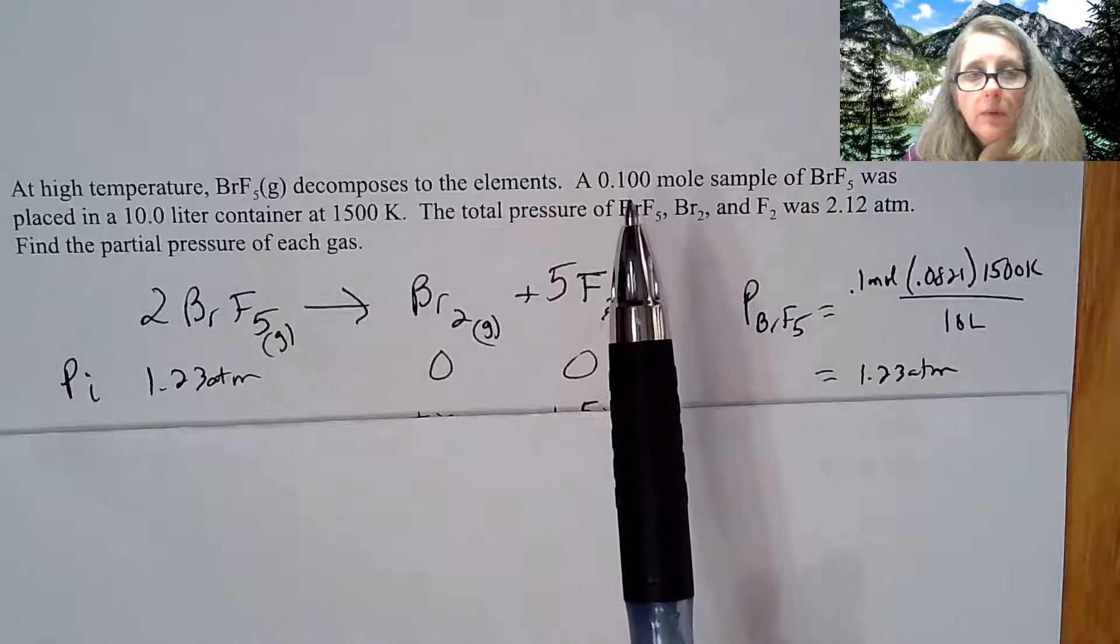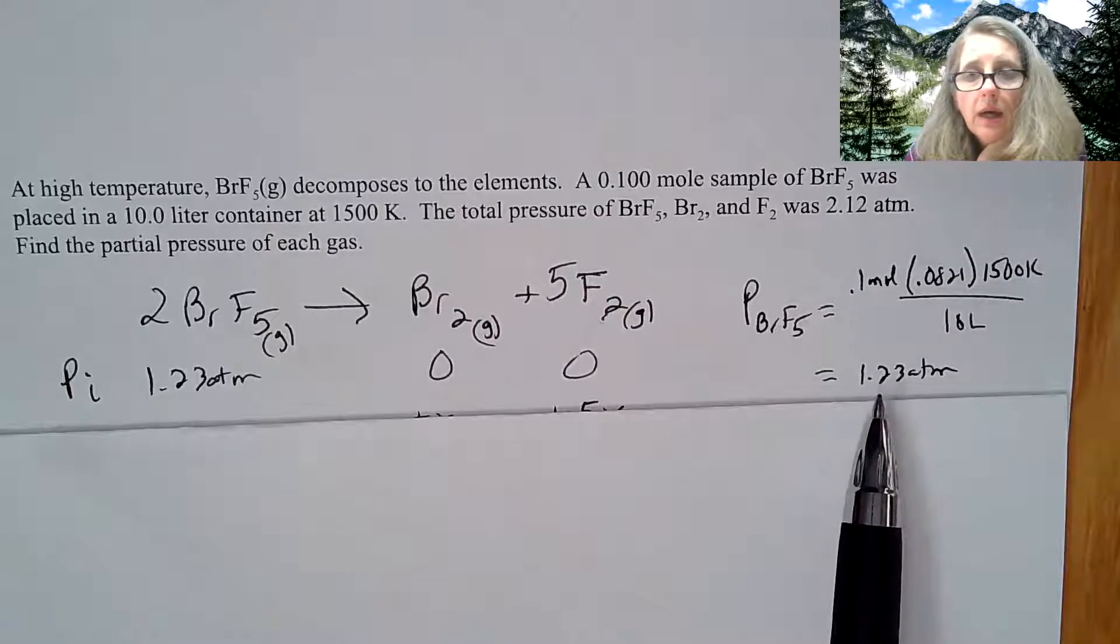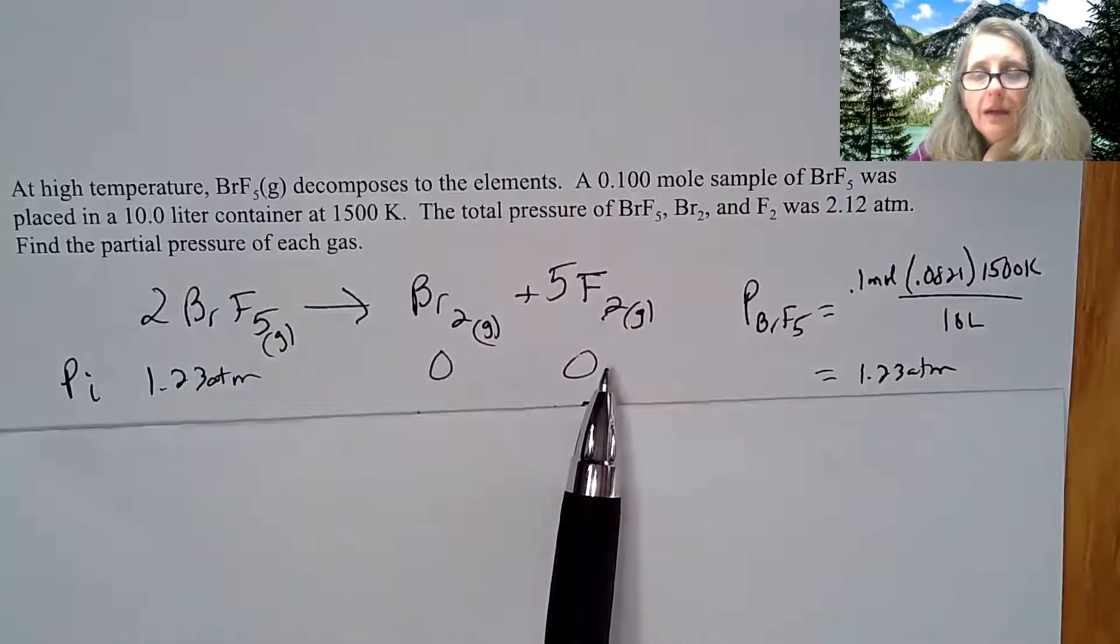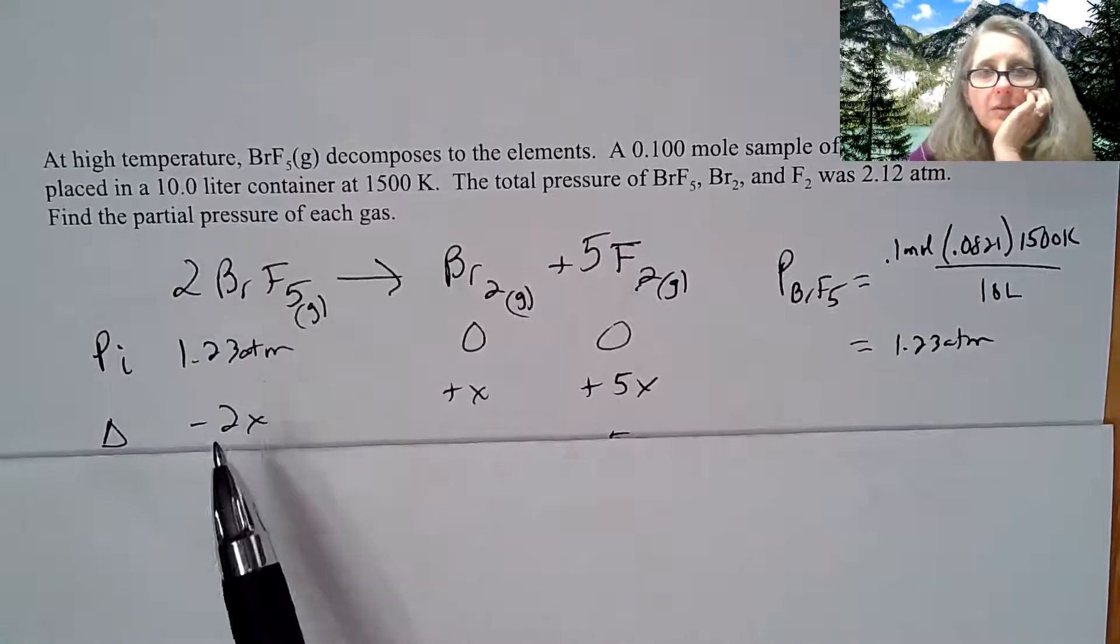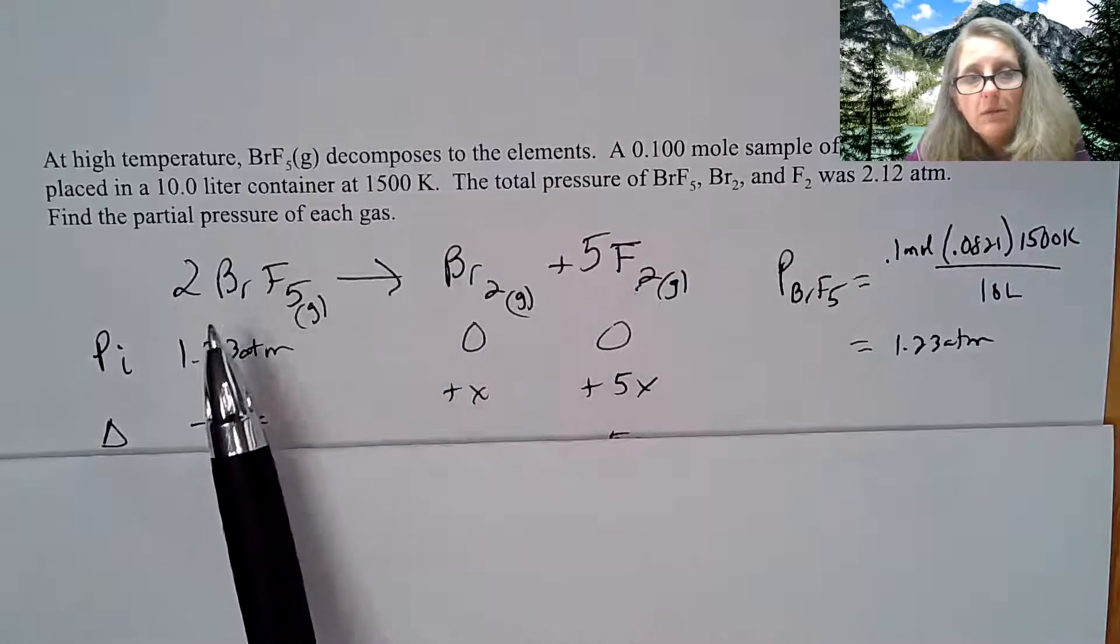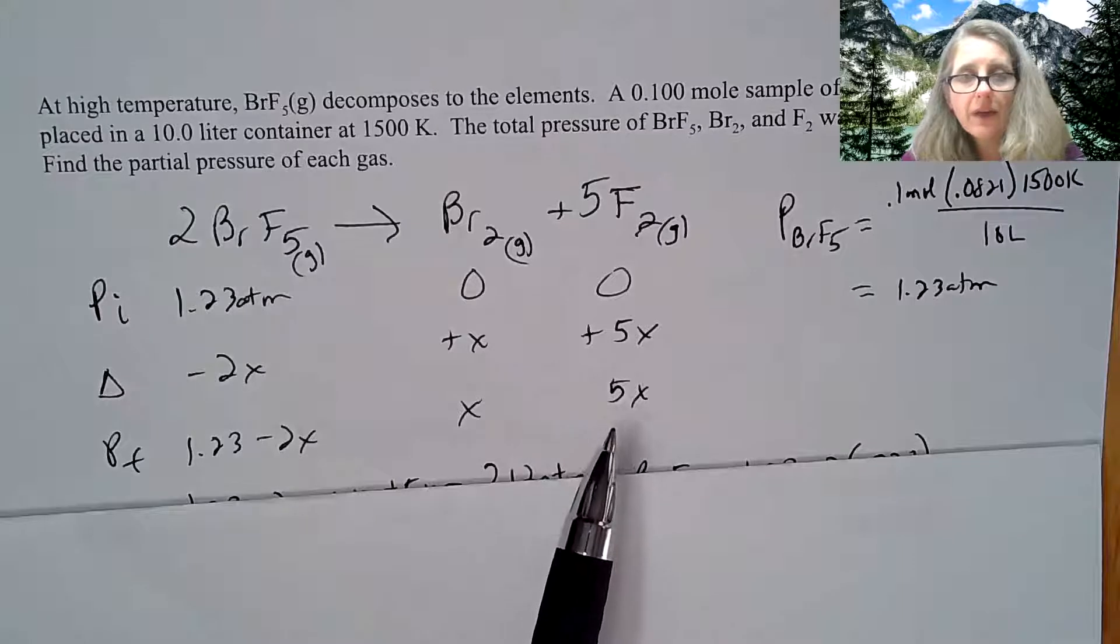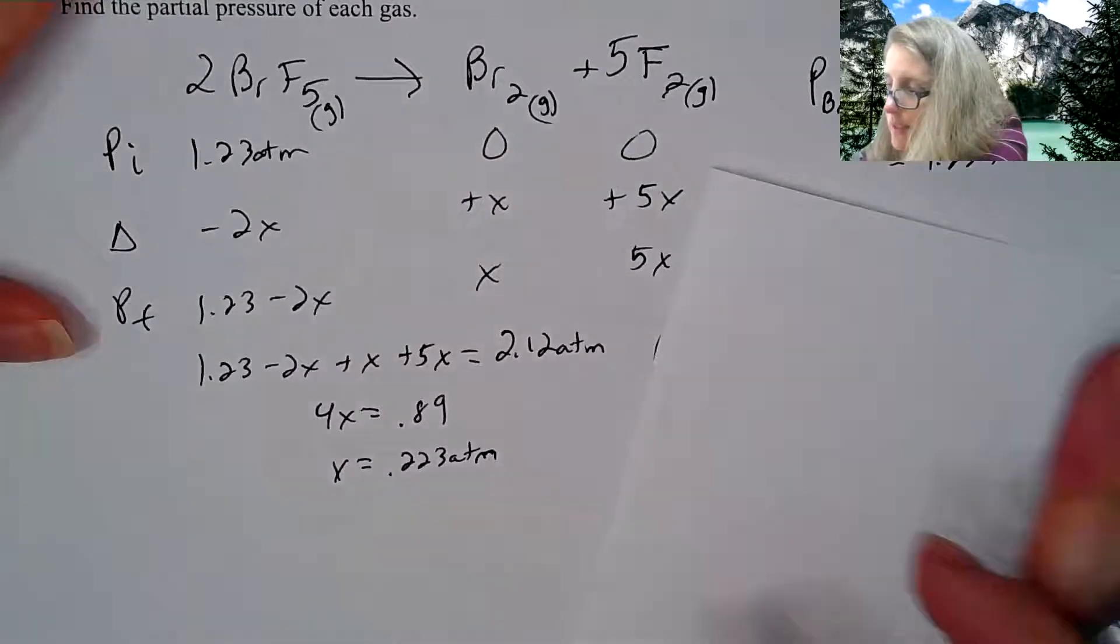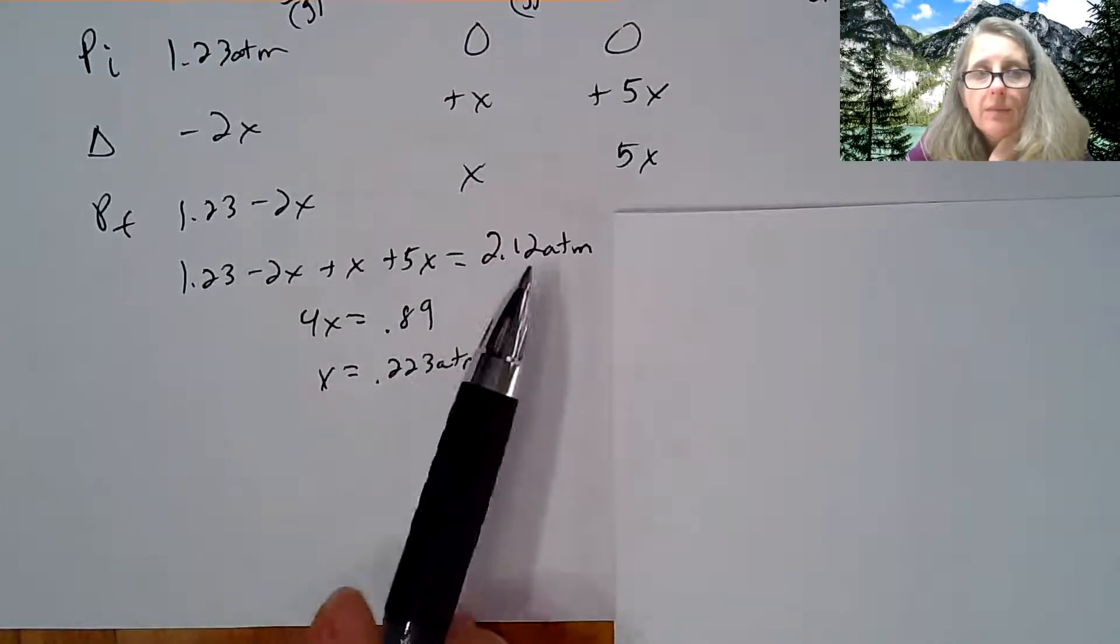I was given a 0.1 mole sample, 10 liter container at 1500 Kelvin. I could plug that into PV equals nRT and find my pressure in atmospheres, 1.23 atmospheres. I'm starting with that much pressure, and I have none of my products to begin with. I have change, but this time I don't really have any information as to how much this decomposes. So I have to go by the proportions. This is going to be minus 2x, this is x, and this is 5x. It's always proportional to the balanced chemical equation. I do know the total pressure is 2.12 atmospheres. So I could take all of those and get them equal to each. I could add them all together to get 2.12 atmospheres. I could find my x as being 0.223 atmospheres from the calculation here.